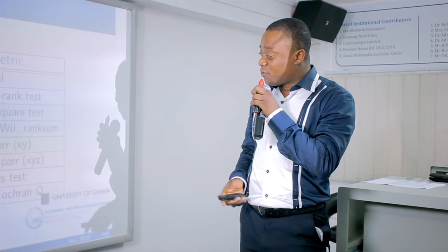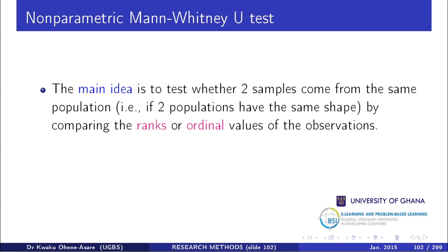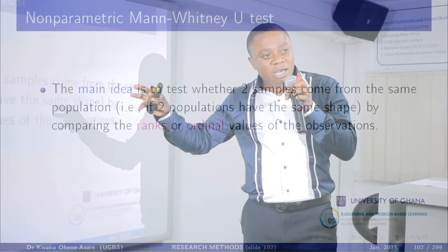The Mann-Whitney U test, or Wilcoxon rank-sum test, is used to test the equality of means — or medians — in two independent, unpaired, unrepeated samples. The main idea is to test whether the samples come from the same population. For example, you pick ages of men and ages of women, assuming the data is skewed, to see if they come from the same population.